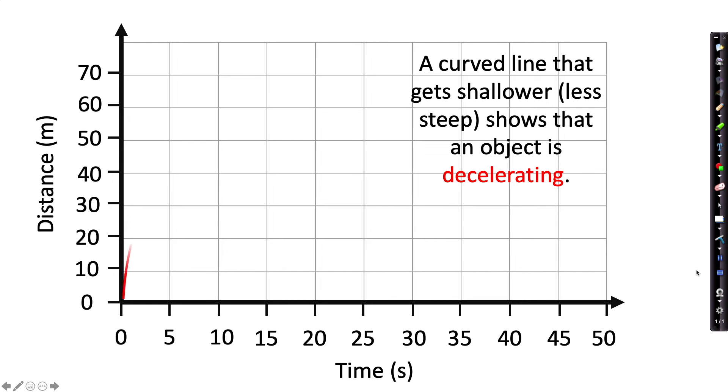A curved line that gets shallower, less steep, shows an object decelerating. So in this first section it is much steeper so the object is moving faster, and in the second section it is less steep so the object is slower.